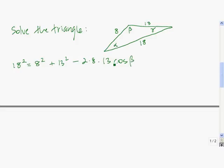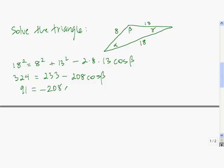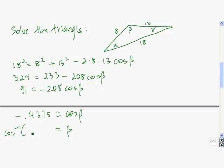We plug both sides into our calculator to get the equation. We want to isolate cosine of beta, so we subtract 233 from both sides, giving 91 equals negative 208 cosine of beta. Then we divide both sides by negative 208, so we get negative 0.4375 equals cosine of beta. Then beta equals the inverse cosine of this, which is about 115.94 degrees.